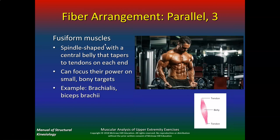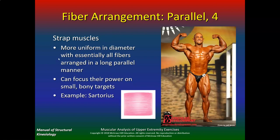Fusiform muscles are spindle-shaped with a central belly that tapers to tendons on each end. They can focus their power on small bony targets. Examples would be the brachialis and the biceps brachii. Still in the parallel form — strap muscles are more uniform in diameter with essentially all fibers arranged in a long parallel manner. They can focus their power on small bony targets, such as the sartorius.